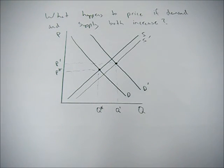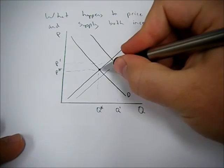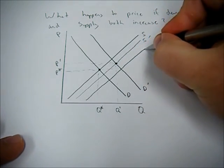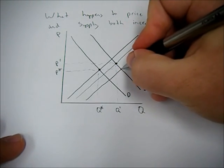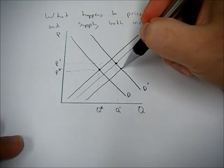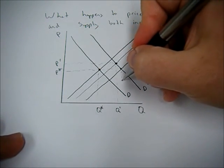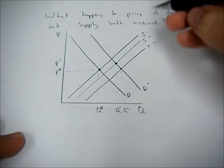So is the answer that price goes up? Not so fast. What if I shift the supply curve here? You can now see the equilibrium price is the same as it was originally, but equilibrium quantity went up.